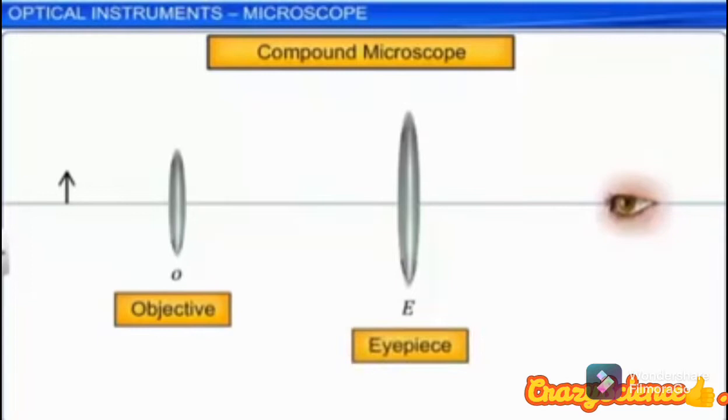The objective of a compound microscope has a small focal length and a small aperture, whereas the aperture of its eyepiece is large.